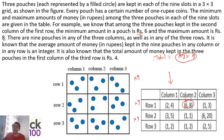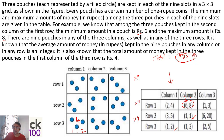It is also known that the total amount of money in the three pouches in the first column of the third row is four. If the total is four and it's made of one-rupee coins, the only way is one rupee, one rupee, and two rupees — that's how four rupees comes.